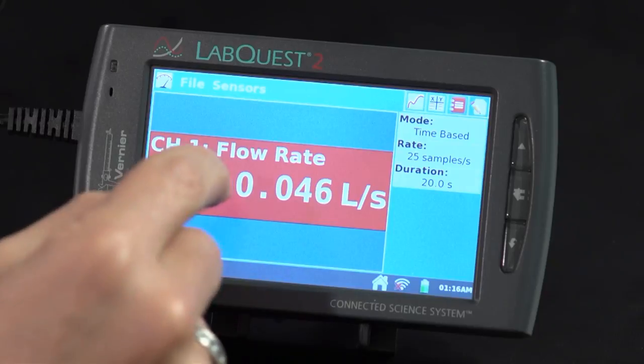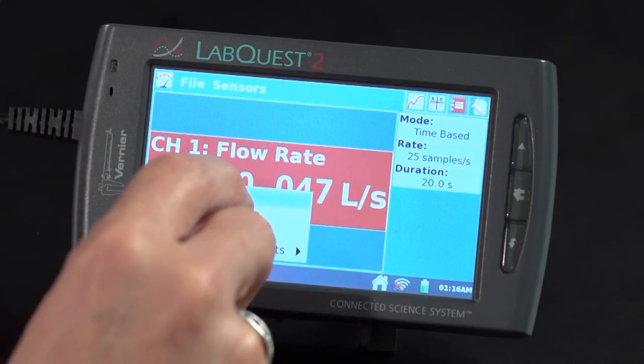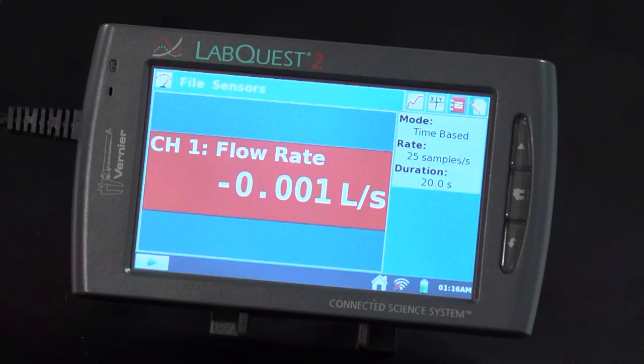And to zero the spirometer, all that I need to do is just tap on the meter screen. I should just be able to select a zero right there. And now you should see that the flow rate is very close to zero. It's fluctuating between minus 0.002 and 0.01, which is effectively zero.